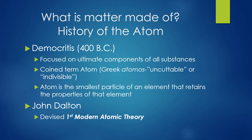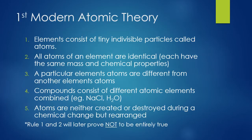John Dalton came along and devised the first modern atomic theory, which we'll look at next. This theory had five main postulates. The first two postulates later proved not to be entirely true, and we'll look more closely at that when the time comes.